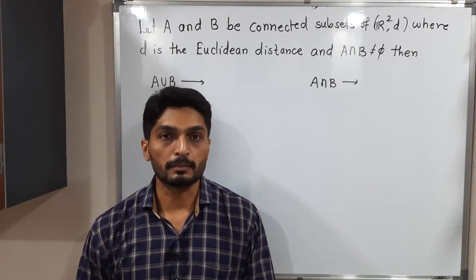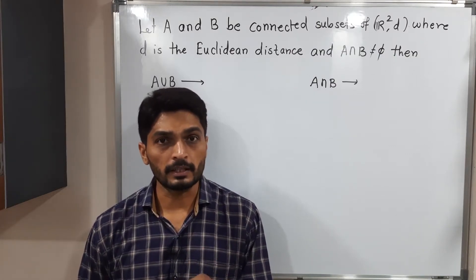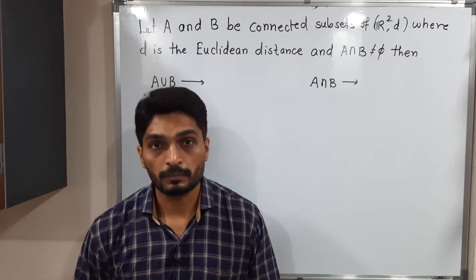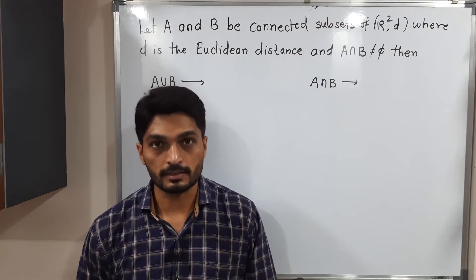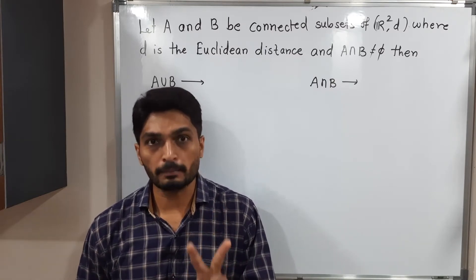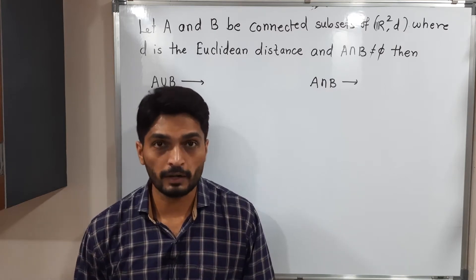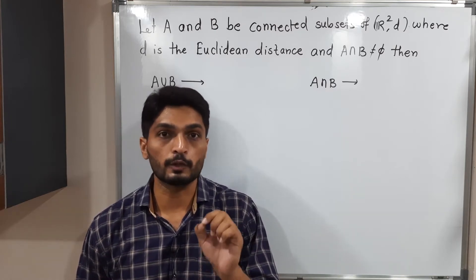Let us discuss this example. In this example, they have given metric space R² with D where D is the Euclidean distance. They have given two sets A and B which are connected subsets of R², and their intersection is not equal to phi (empty set).